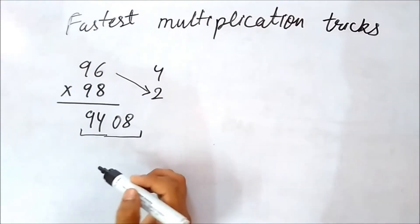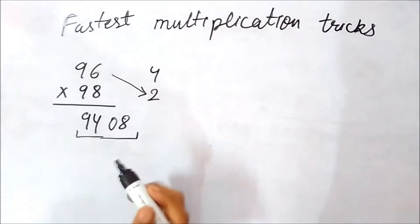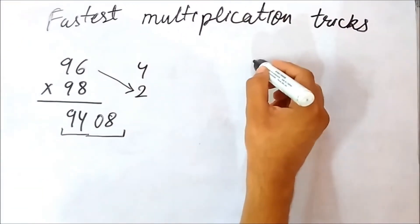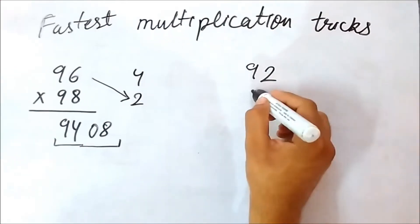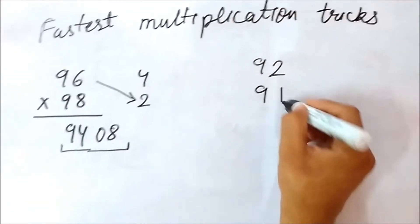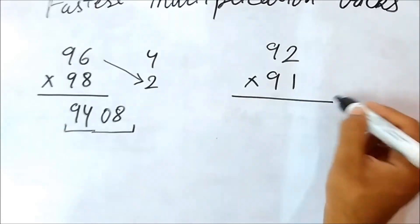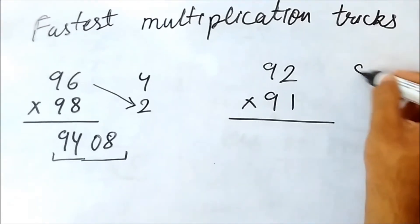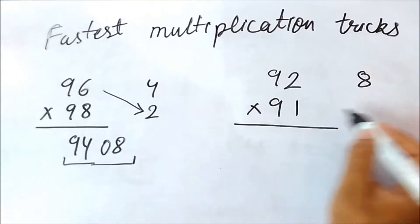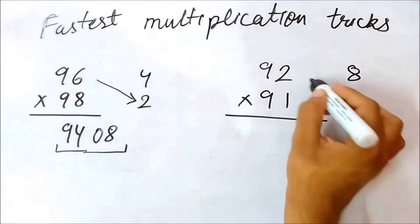So it's a very simple trick. Let us understand with another example. We will understand it very easily. 92 multiplied by 91. How to multiply? So 92 is less by 8 from 100. 91 is less by 9 from 100.